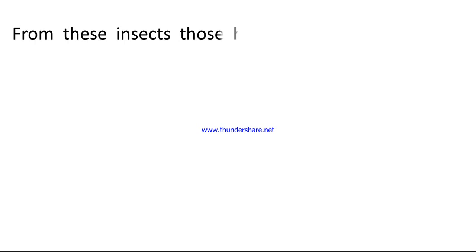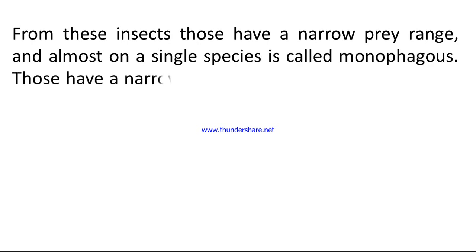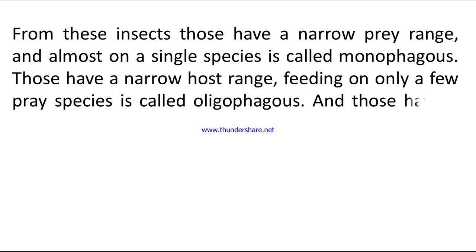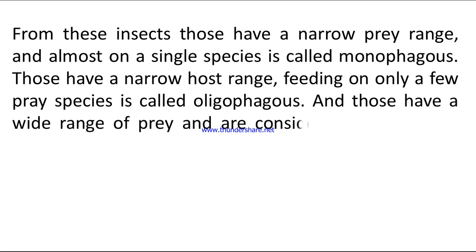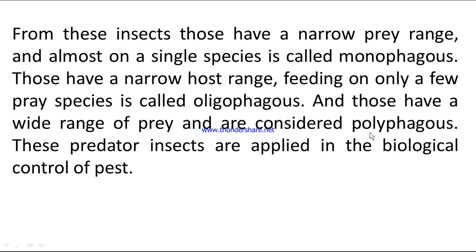From these insects, those that have a narrow prey range and feed on almost a single species are called monophagous. Those with a narrow host range feeding on only a few prey species are called oligophagous, and those with a wide range of prey are considered polyphagous.